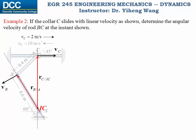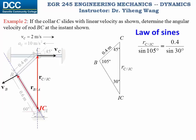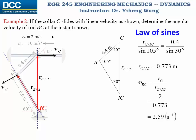This is the relative position of point C with respect to IC. In this triangle we can determine the three angles easily, and we know one side and want to find the side from C to IC. According to the law of sines, we can solve this relative distance to be 0.773 meters. Remember the ratio between V_C and R_C relative to IC is omega, the angular velocity of rod BC. Therefore from here we can easily calculate omega to be 2.59 radians per second, which is the same answer we got in the previous video. Since point C is moving to the right, which is clockwise about the instantaneous center, therefore the direction of rotation is clockwise.